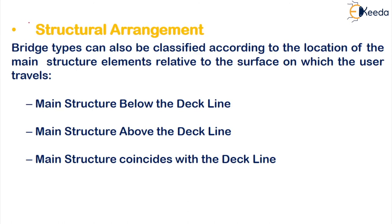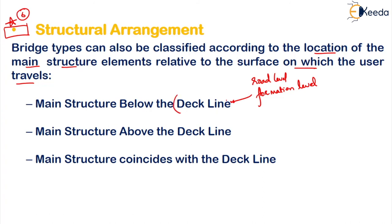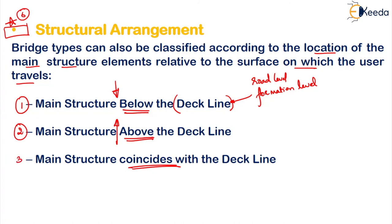There is one more category based on structural arrangement — this is the sixth classification. Bridges are classified according to the location of the main structure relative to the surface on which the user is traveling. The place where the user travels is called the road level, formation level, or deck line. Based on where the bridge structure is placed relative to the deck line, the classification is made. There are three types: main structure below the deck line, main structure above the deck line, or it coincides with the deck line.